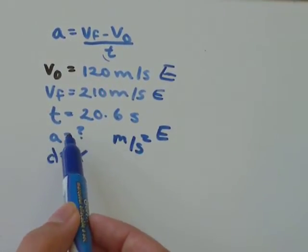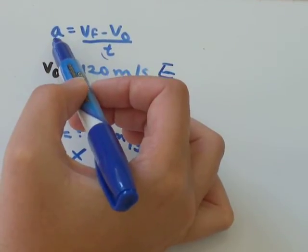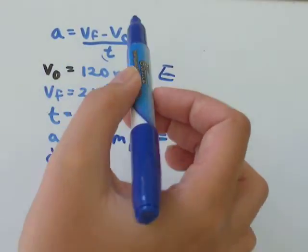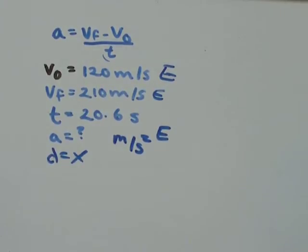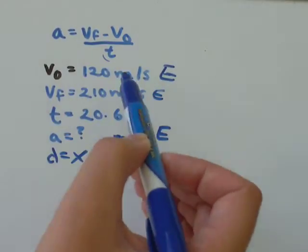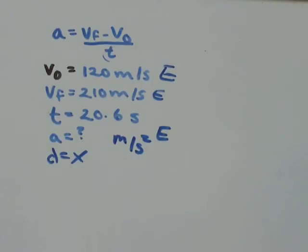We don't know what a is, so that's what we're being asked to find. We have an a in the equation, we have Vf, we have V₀, and we have t. So all you need to do is put in the values you have and solve for the values you don't have.